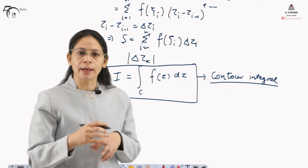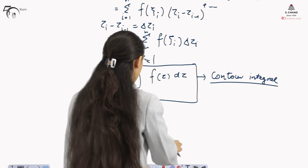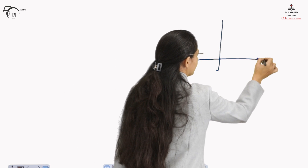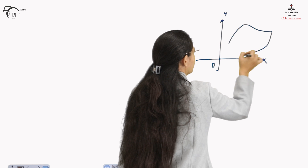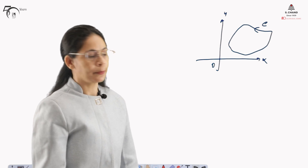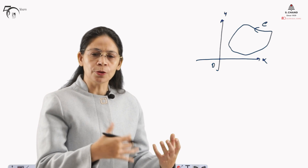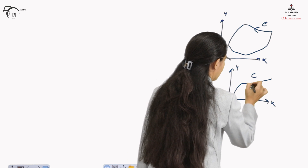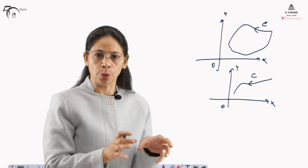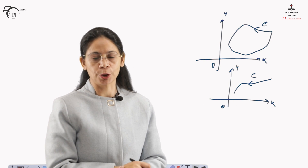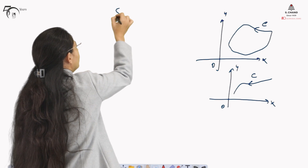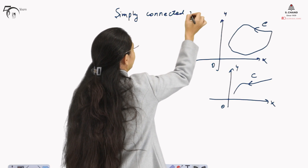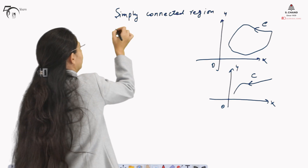It is not necessary that C is always represented as a closed loop. In the xy-plane, C can be represented by a line or open curve, but the direction must be shown to indicate positive or negative direction. This gives rise to two important terms: simply connected region and multiply connected region.